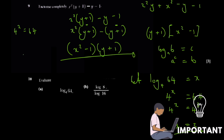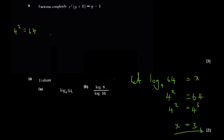You have 4 to the power x equal to 64. Since 2 is a common base for both 4 and 64, express them: 4 is 2 squared, and 64 is 2 to the power 6 (since 2, 4, 8, 16, 32, 64 — that's six doublings). So you get 2 to the power 2x equals 2 to the power 6. Since the bases are the same, the powers must be equal: 2x equals 6, so x equals 3.